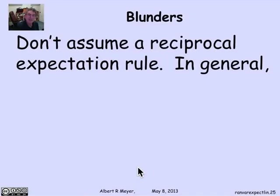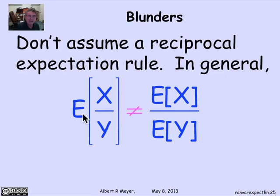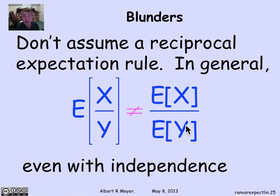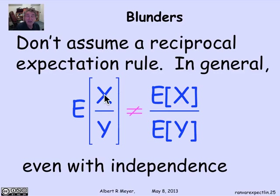A second blunder: there's a temptation to assume that if the product rule holds for independent variables, then so should a reciprocal rule — that the expectation of x over y equals the expectation of x over the expectation of y when x and y are independent. But it's not true. Even when they're independent, the expectation of x divided by y is in general not equal to the expectation of x divided by the expectation of y. In fact, a counter-example is when x is the constant 1, giving the expectation of 1 over y.